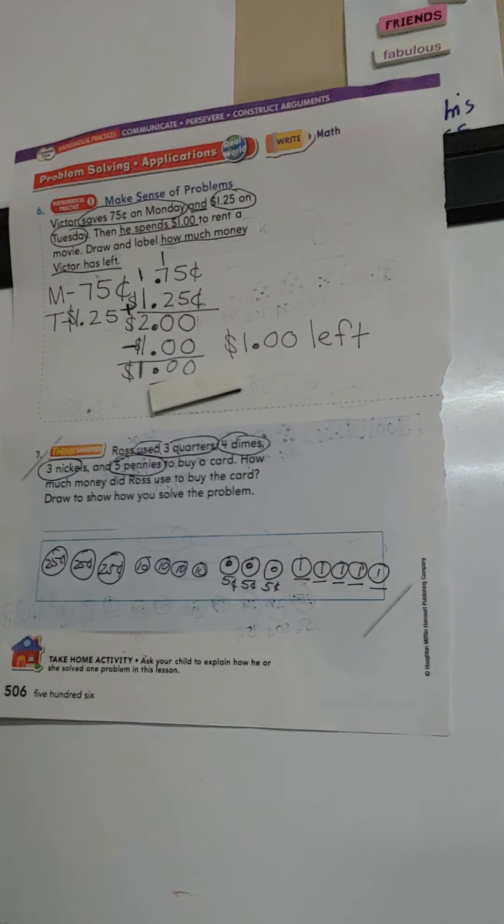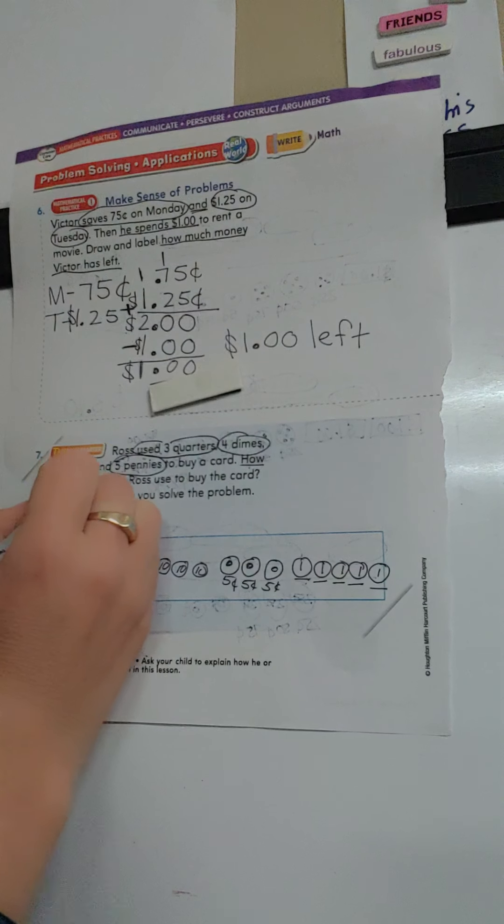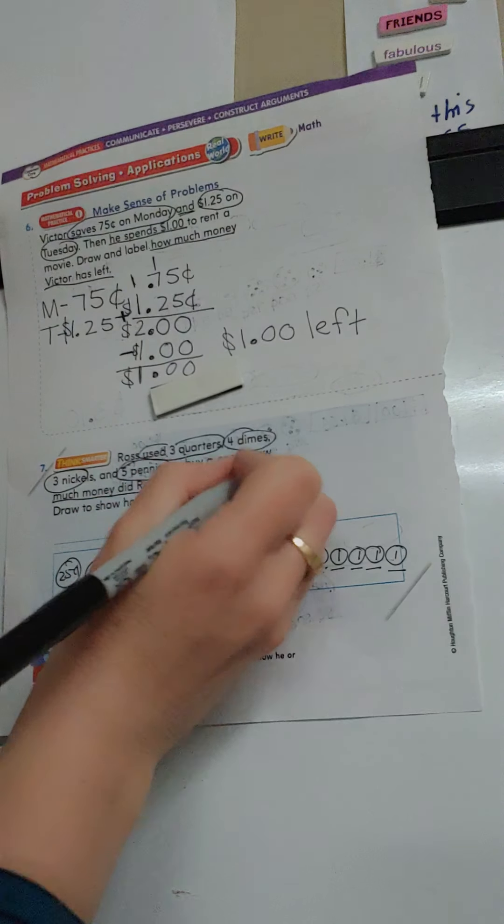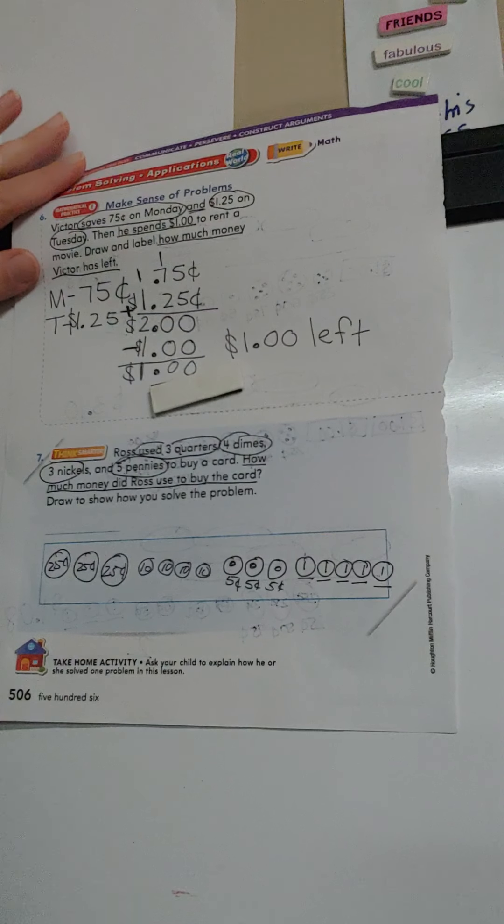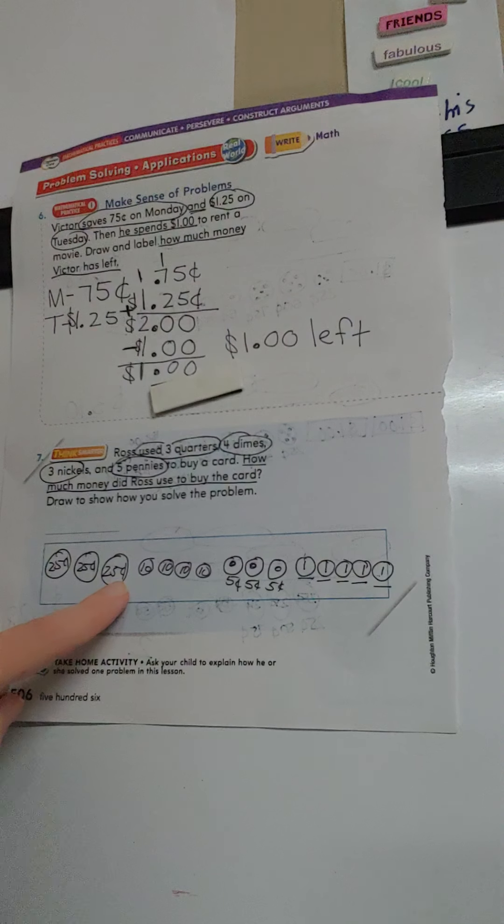How much did Ross use? That's what we have to figure out. We're using the information that we know. This is what we have to find. So we know three quarters, 75 cents. Okay. 75.